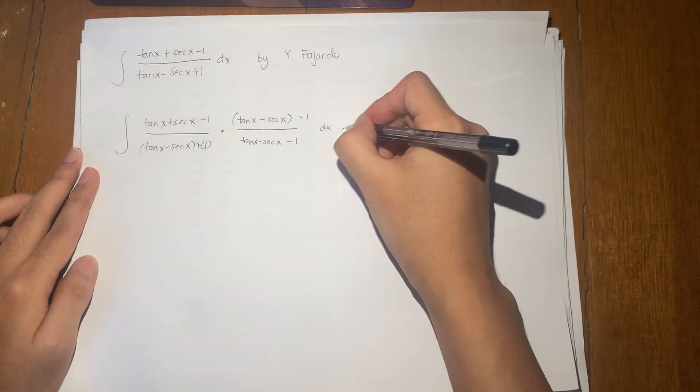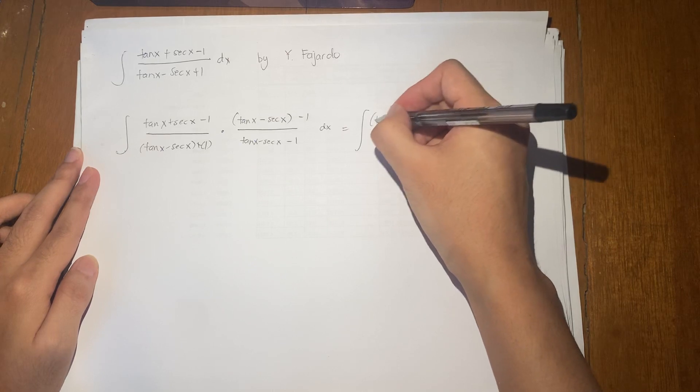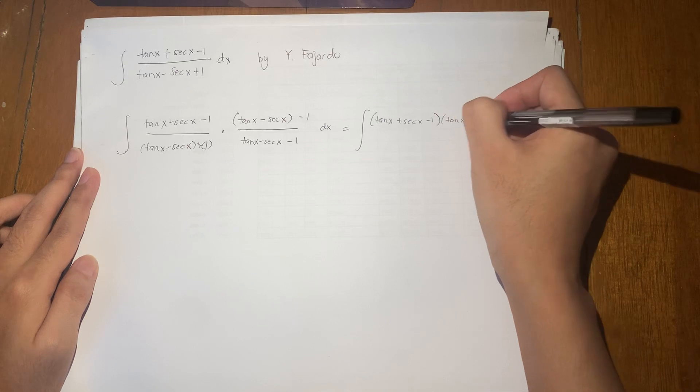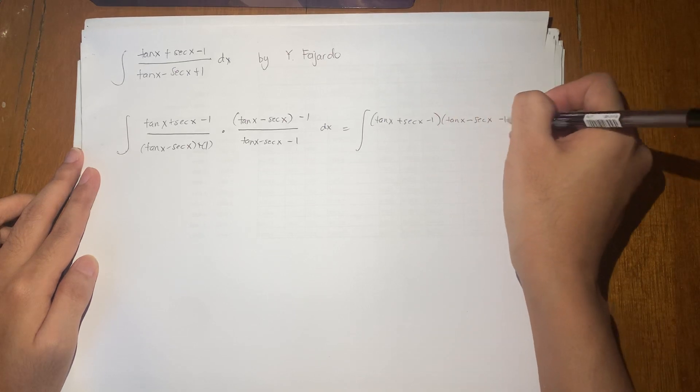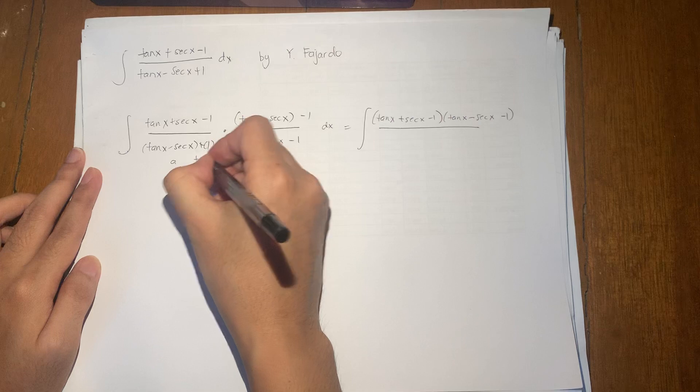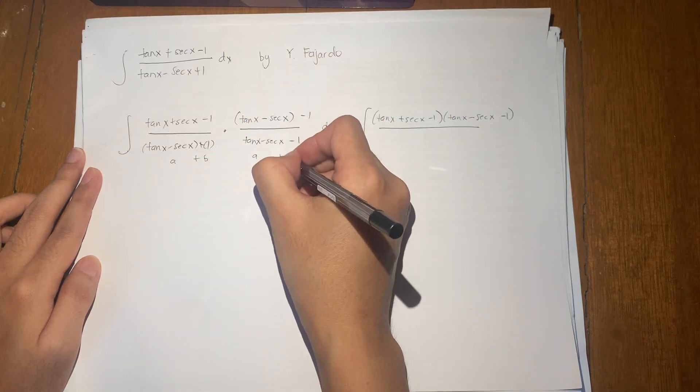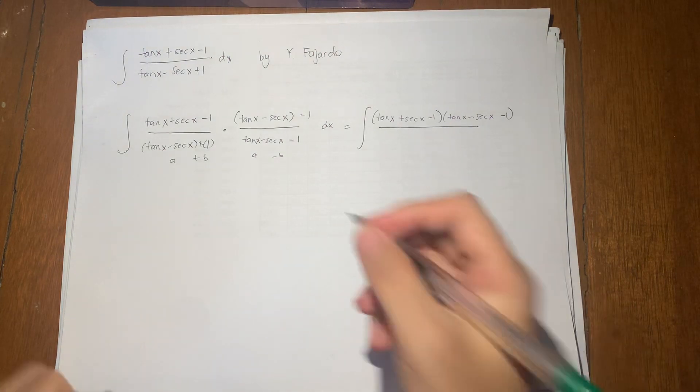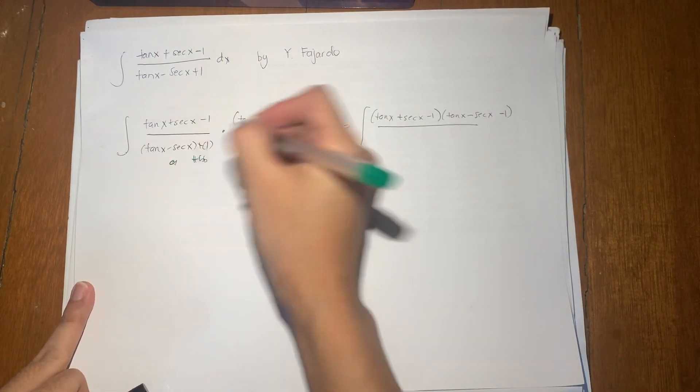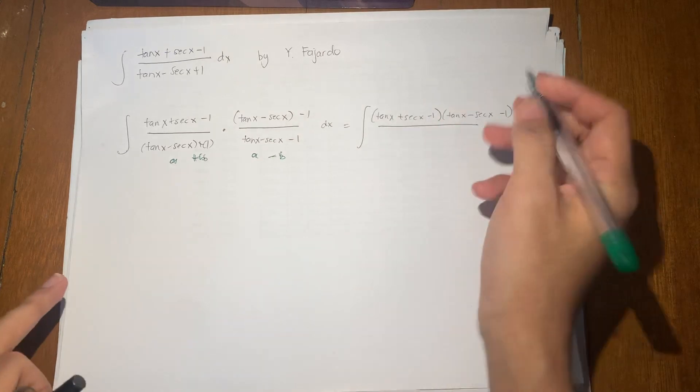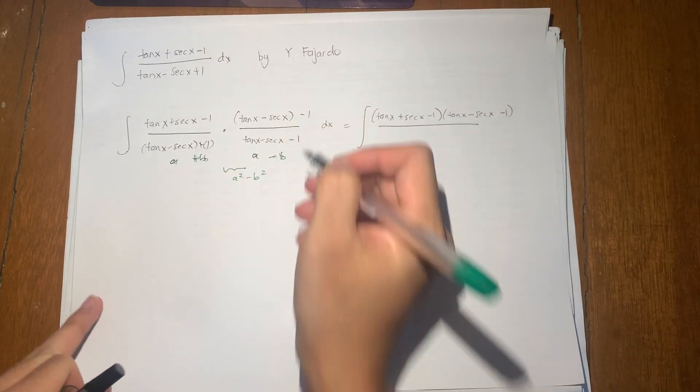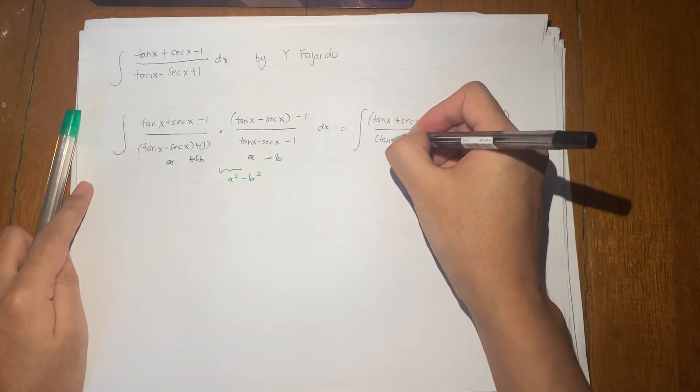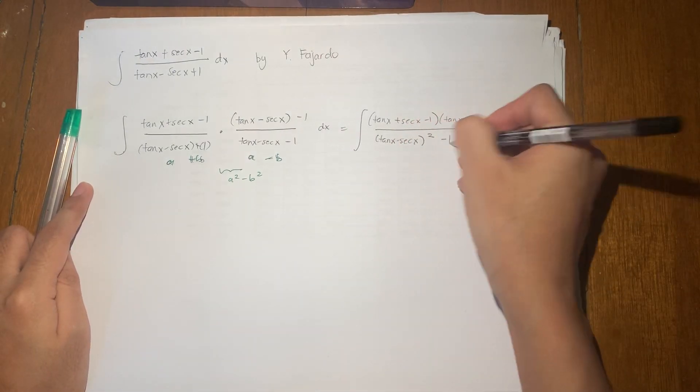So this way, the numerator becomes the product of these whole terms times tan x minus secant x minus 1. Over this one, since this is a plus b and a minus b, where a is tan x minus secant x and b is your 1. So this is a plus b, a minus b, this becomes a squared minus b squared. So this entire term here becomes tan x minus secant x squared minus 1.